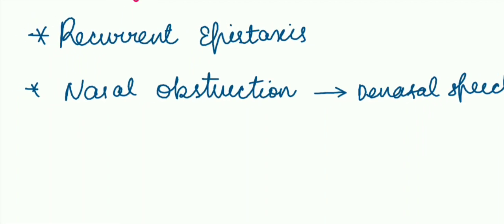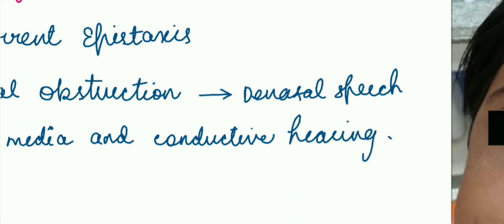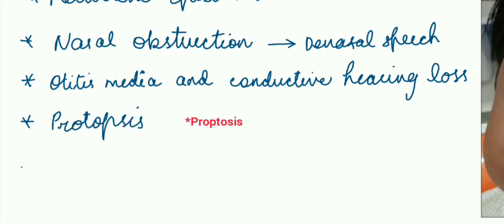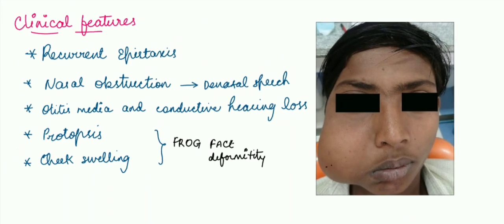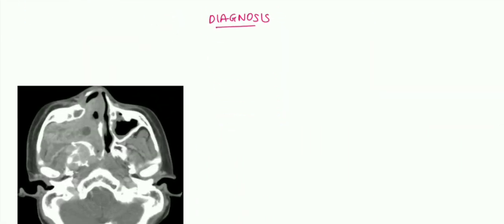And the next one is otitis media. Frequent infections can cause conductive hearing loss. Then proptosis and cheek swelling, both of which are due to lateral extension. These result in formation of frog face deformity, as we can see in this picture very clearly. There is a swelling of the cheek, and the last one is involvement of nerves depending upon which fossa gets involved.